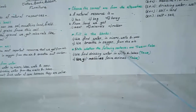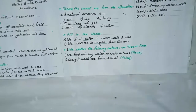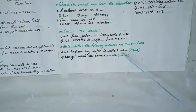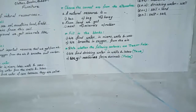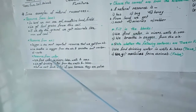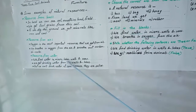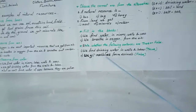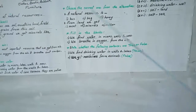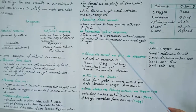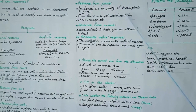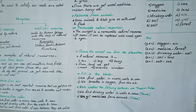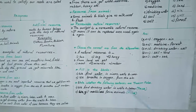Next, state whether the following sentences are true or false. First: we find drinking water in wells and lakes. We find water in rivers, lakes, wells and seas. So the statement is true. Second: we get medicine from animals. From the forest, we get wood and medicine. Medicine comes from the forest, not animals. So the statement is false.